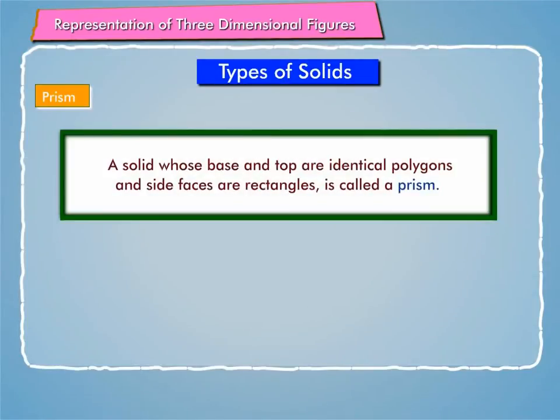Prism: a solid whose base and top are identical polygons and side faces are rectangles, is called a prism.